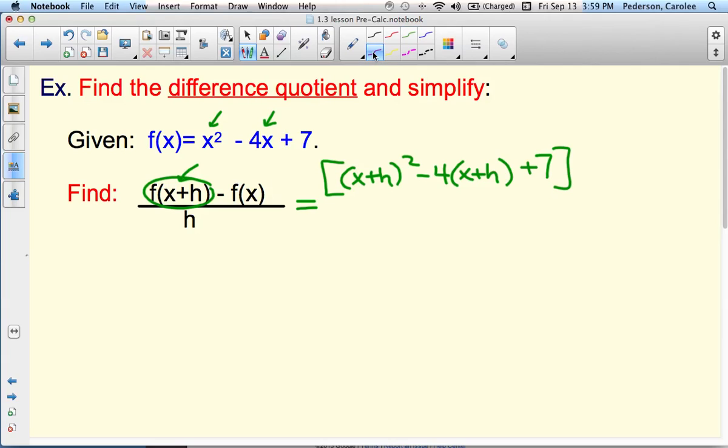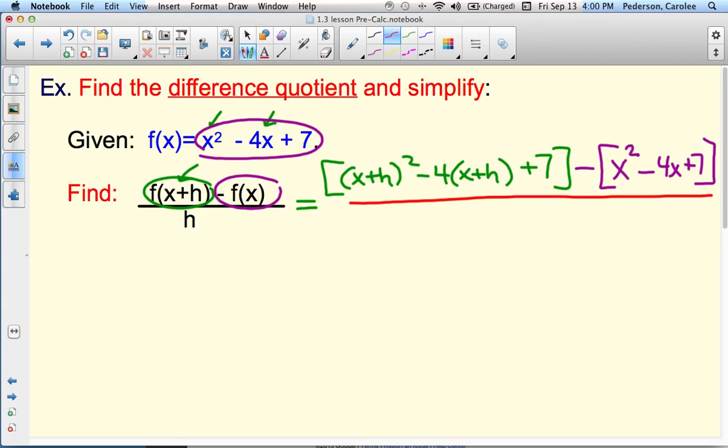Now I'm going to change colors. It says minus the function. So I want to minus that function in the blue. So minus, and I'm going to just rewrite the function: x squared minus 4x plus 7, and then all over h.